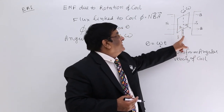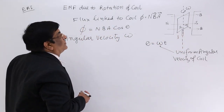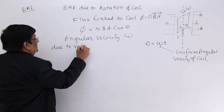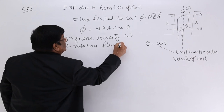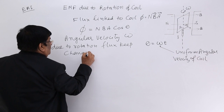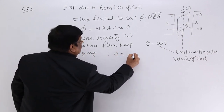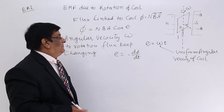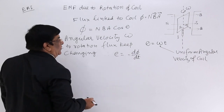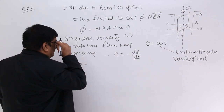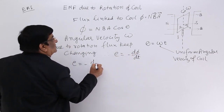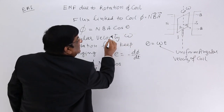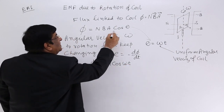Due to change of flux, an EMF is induced, and that is the EMF we want to calculate. At any time, flux is this much due to rotation. Therefore, E is equal to minus d phi by d t. This is differentiation with respect to time of phi, and phi is N, B, A, cos omega t — replacing theta with omega t so that this becomes a function of time.